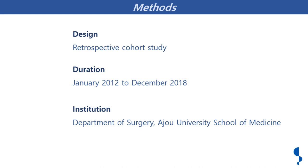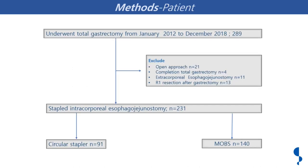This retrospective cohort study runs from January 2012 to December 2018 at the Department of Surgery, Aju University. Inclusion criteria: patients who underwent total gastrectomy from January 2012 to December 2018. Exclusions: open approach, completion total gastrectomy, extracorporeal esophagojejunostomy, and postoperative pathological R1 resection. Only laparoscopic and robotic total gastrectomy were counted.